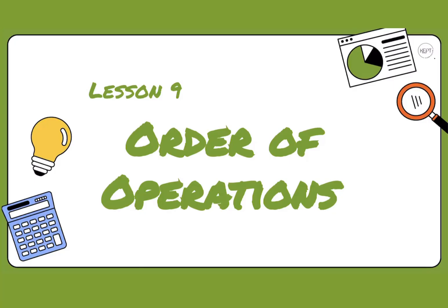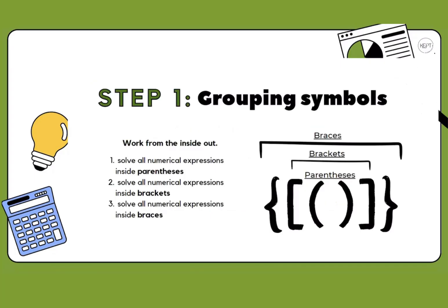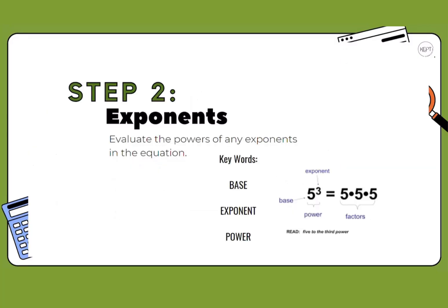Lesson nine: order of operations. Step one is to look at the grouping symbols. We always want to work from the inside out. You may see parentheses doubled or tripled — you still want to work from the innermost out. You might also see brackets and braces; always work in order from the innermost towards the outside.